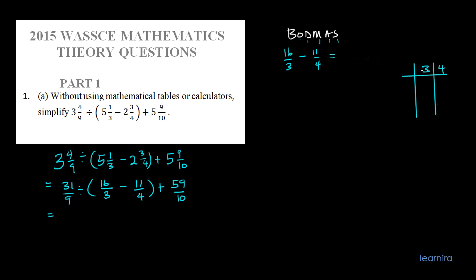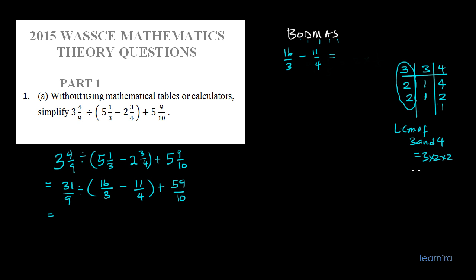To find the LCM: the smallest factor that can divide 3 is 3, but 4 divided by 3 gives a remainder, so we try 2 instead. The smallest factor that can divide 4 is 2: 4 ÷ 2 = 2, then 2 ÷ 2 = 1. So the LCM of 3 and 4 is 3 × 2 × 2, which equals 12.